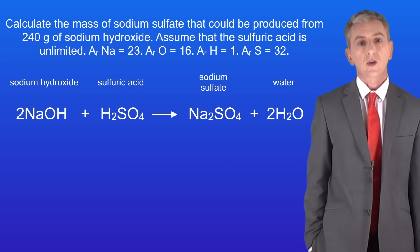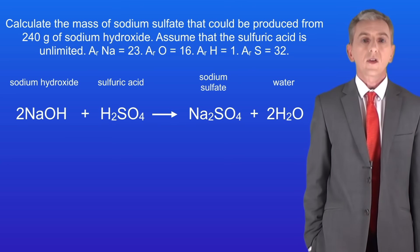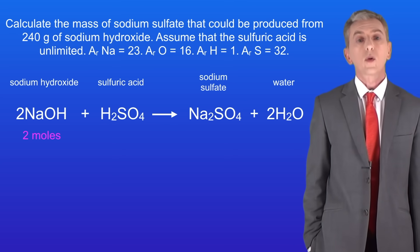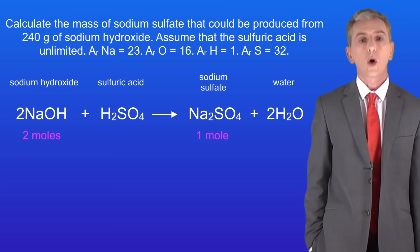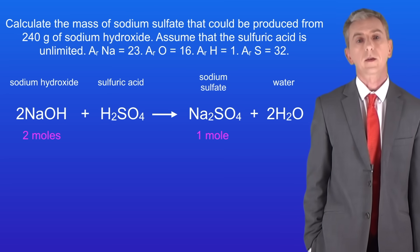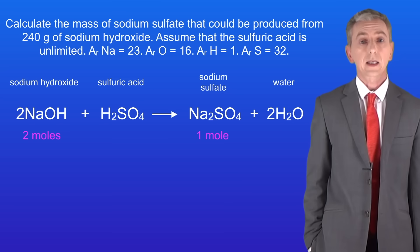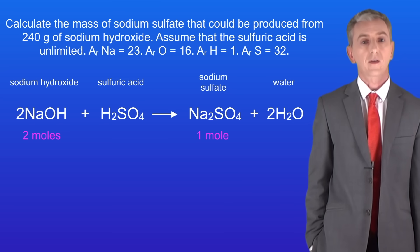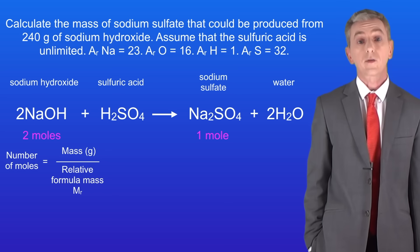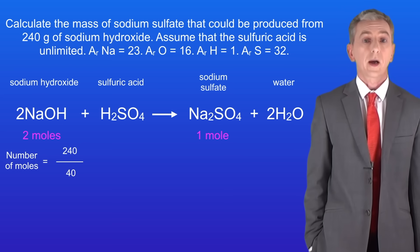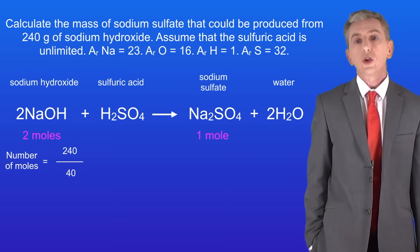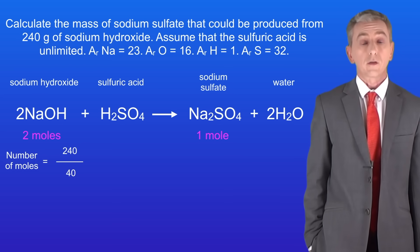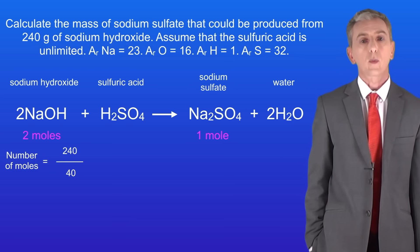First we need to look at the big numbers in the equation. We can see that 2 moles of sodium hydroxide makes 1 mole of sodium sulfate. We now need to calculate the number of moles of sodium hydroxide that we have. The number of moles is the mass divided by the relative formula mass. The relative formula mass of sodium hydroxide is 40. 240 divided by 40 tells us that we've got 6 moles of sodium hydroxide.